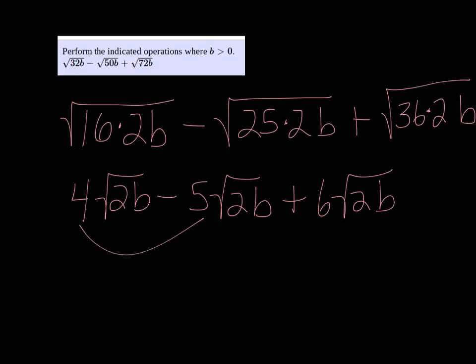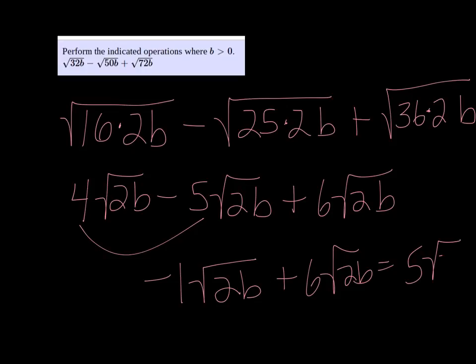So if I do 4 minus 5, I get negative 1, and then add 6 to that, I get 5 square root of 2B.